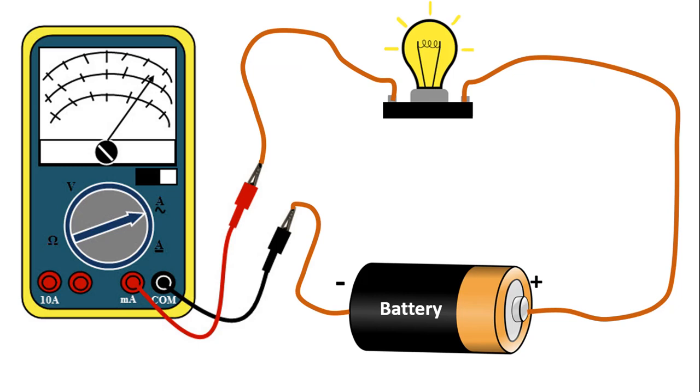To measure current in a circuit, we need to connect an ammeter in series. Think of it like a water meter. In order for us to know how much water is flowing in the pipe, the water must pass through the water meter. Likewise, we need the number of electrons passing through our ammeter to know how much electricity is flowing in our circuit.